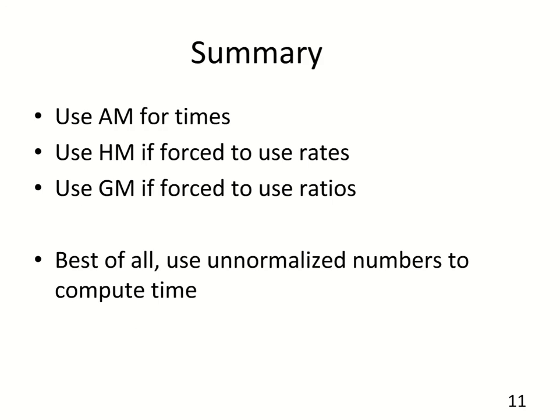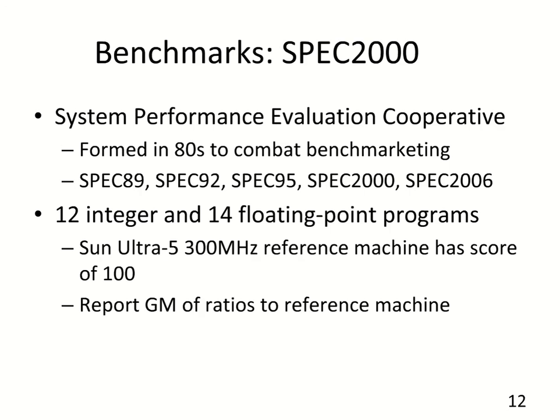Summarizing our discussion of how to compute means: if you have execution times, you're fine using arithmetic mean. If you're forced to use rates like MIPS or megaflops, you should use harmonic mean. If you're forced to use ratios like speedups, then you should use geometric mean. Best of all, use unnormalized numbers to compute time and report those results whenever possible.